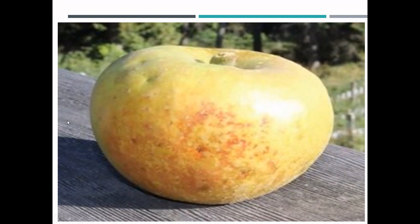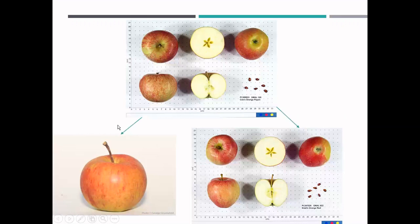And these traits seem to pass on reliably to its offspring. Like, take for instance, these are both direct offspring of Cox Orange Pippin. Kidd's Orange Red is a crossbreed between Red Delicious and Cox Orange Pippin, and this is another hybrid between Cox Orange Pippin and something else, although I cannot remember the cultivar name off the top of my head.